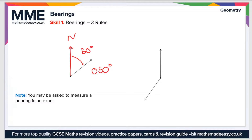The final rule is that we always measure clockwise from the north line. So if this was our bearing, we'd go clockwise to give the angle, rather than measuring the obtuse angle, which would be counterclockwise from the north line.